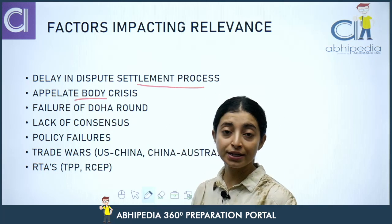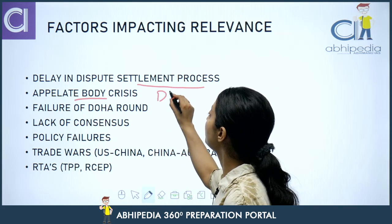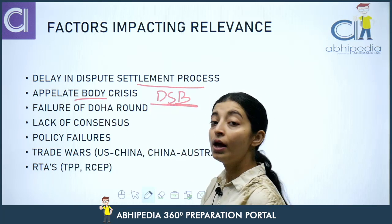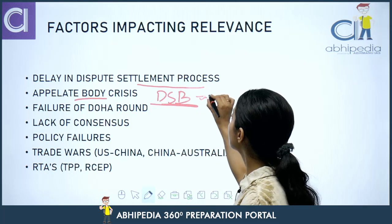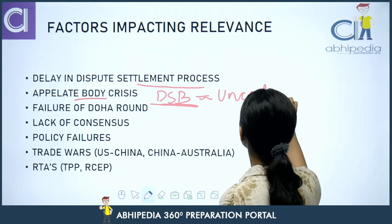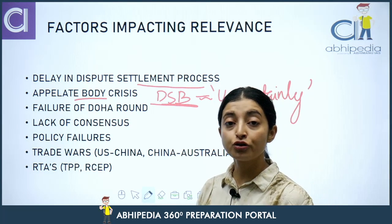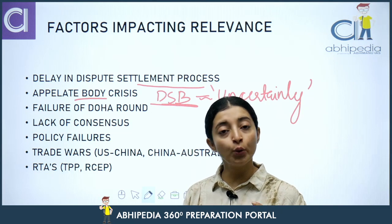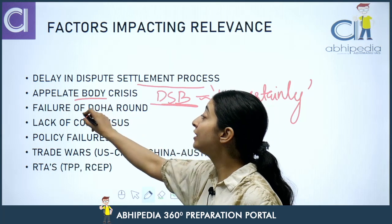Next, there is the appellate body crisis — as we discussed in the last lecture. The appellate body is a very important part of WTO's dispute settlement body. Currently, there are no members in the appellate body, so there is an appellate body crisis causing uncertainty. There is no appellate body functioning. Further, there is the failure of the Doha Round.